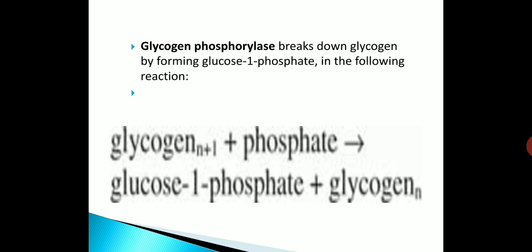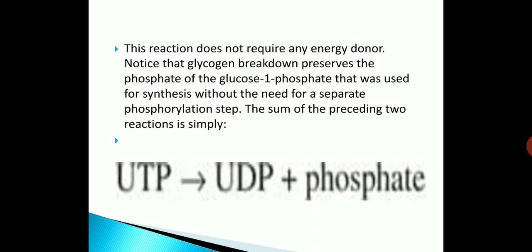Glycogen phosphorylase breaks down glycogen by forming glucose 1-phosphate in the following reaction: glycogen + phosphate → glucose 1-phosphate + glycogen. This reaction does not require any energy donor.